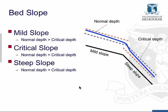I want to recap on the classification of bed slopes covered earlier — mild slopes, critical slopes, and steep slopes. These are defined based on the relative magnitudes of normal depth to critical depth. If the normal depth is greater than the critical depth, so at uniform flow we have subcritical flow, then it's a mild slope. If the normal depth is less than the critical depth, so at uniform flow we have supercritical flow, then it's a steep slope. The threshold condition in between is called the critical slope.